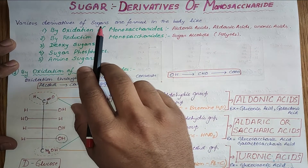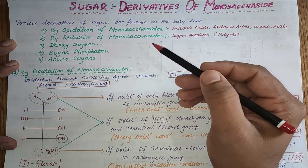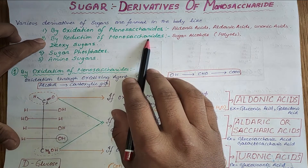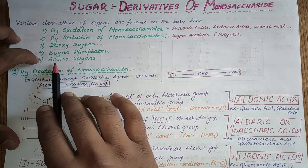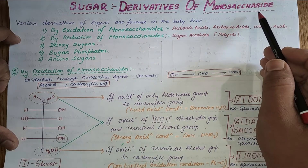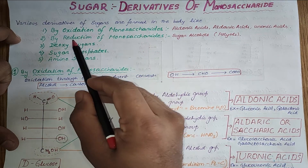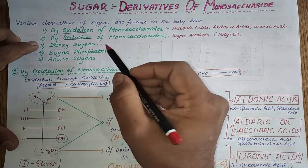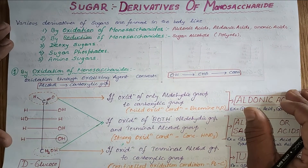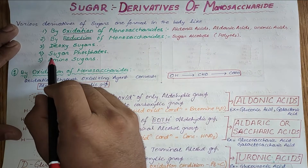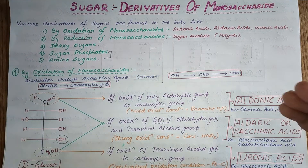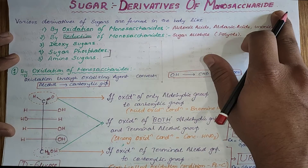The various derivatives of sugars or monosaccharides formed in our body include: by oxidation of monosaccharides, by reduction of monosaccharides, deoxysugars, sugar phosphates, and aminosugars. These are the products formed when monosaccharides undergo oxidation or reduction reactions, or when there is absence of oxygen from a hydroxyl group (deoxysugars), or substitution reactions forming sugar phosphates and aminosugars.